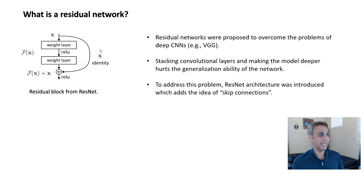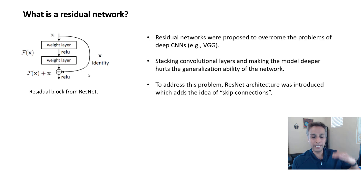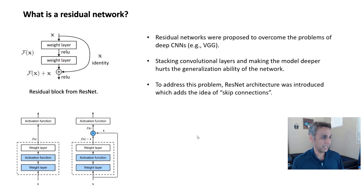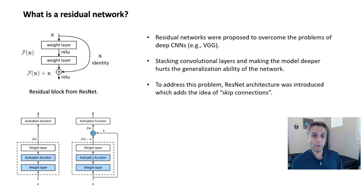To overcome that, the ResNet architecture was introduced, which adds the idea of skip connections — meaning information from here can directly pass on two or three layers down. We'll see why that helps. On the left-hand side is a traditional network; on the right-hand side is the ResNet.